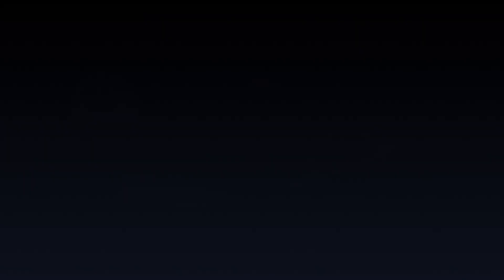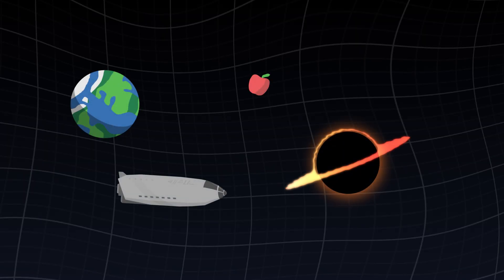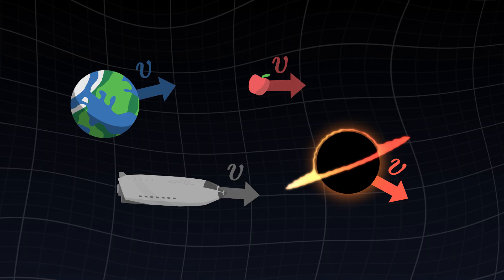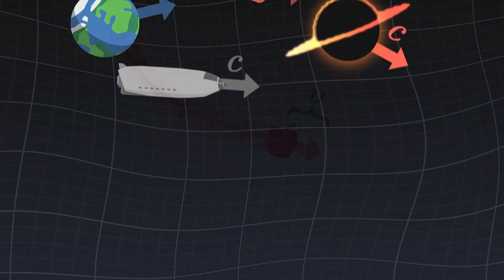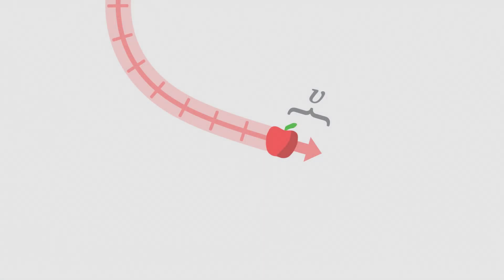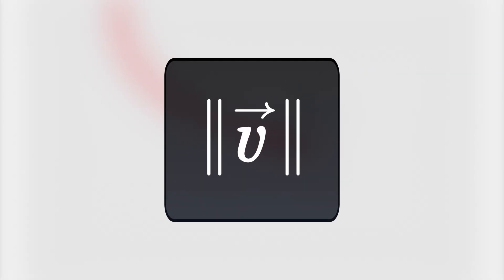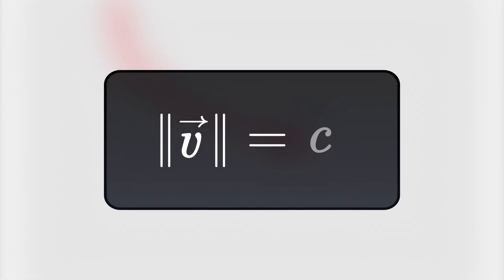More generally, all objects in the universe move with exactly the same speed. It is a universal constant which we call the speed of light, denoted by the letter c. Therefore, we can write our very first equation, which states that the length of the velocity, its norm, is always equal to the speed of light.